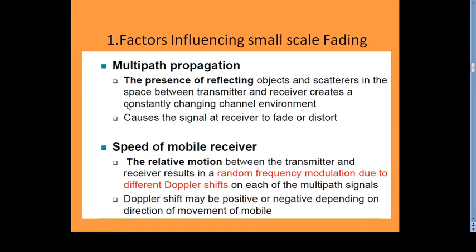The factors influencing small scale fading: the first factor is multipath propagation. Multipath propagation happens when radio waves traveling from transmitter to receiver do not follow a single line-of-sight path but travel in different directions and reach the receiver with different amplitudes, phases, and frequencies. The presence of reflecting and scattering objects between the transmitter and receiver creates a constantly changing channel environment, causing the signal at the receiver to fade or become distorted.